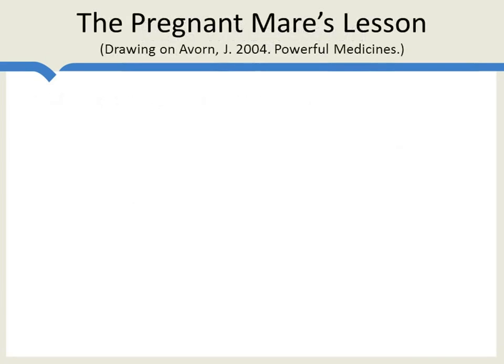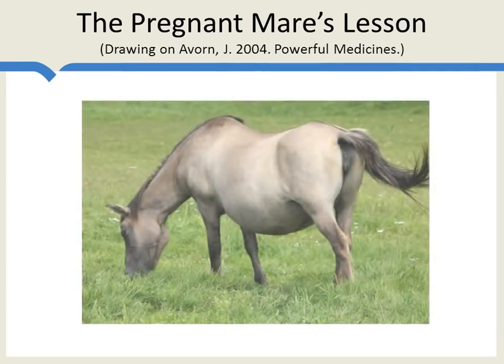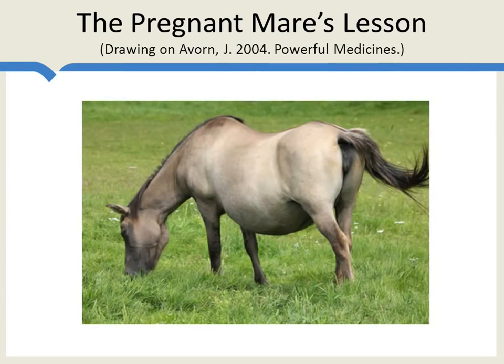The story I want to tell you is a true story about a former British colony. The healers in this colony had what seemed like a strange belief: they believed that the urine of pregnant mares had great healing properties. Specifically, when distilled down to a powder, they believed pregnant mares' urine could make older women more youthful, more feminine, and would ward off disease. These healers were very highly respected, and many women followed their advice and took the powders. After many years, however, a new group of healers decided to test this theory using a randomized controlled trial — and discovered that pregnant mares' urine didn't reduce disease. Instead, it caused heart attacks, dementia, and breast cancer.